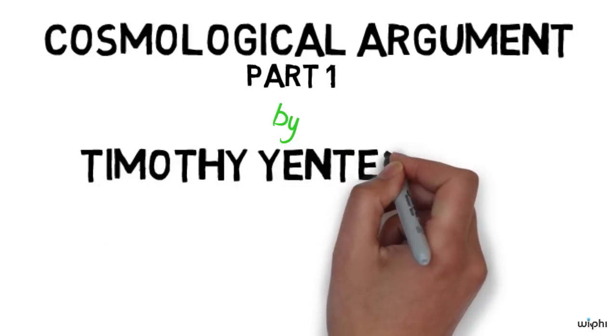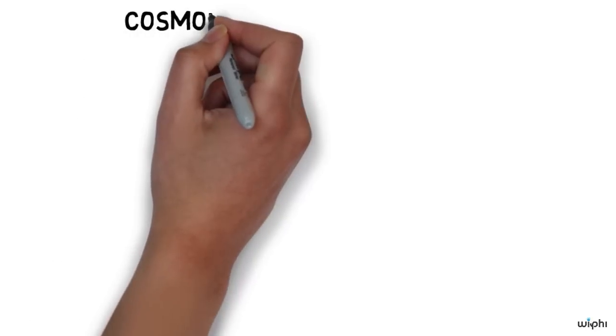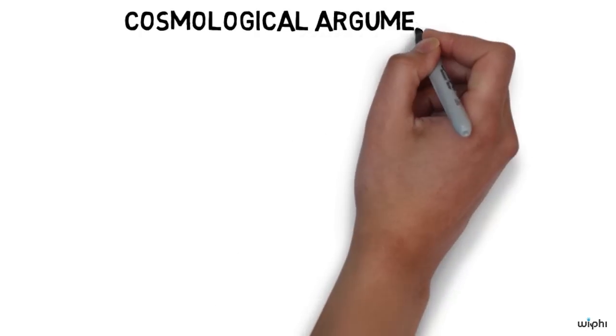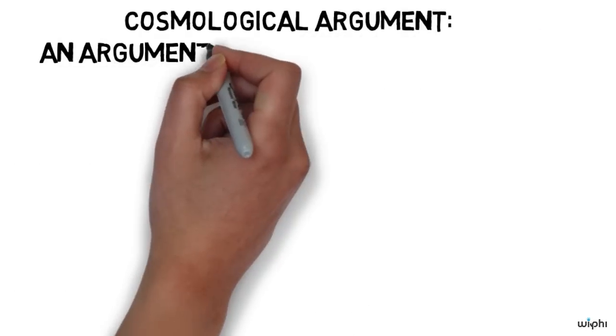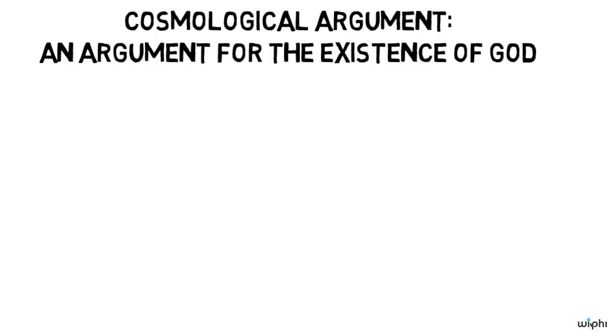I'll be talking about the cosmological argument, which we'll be breaking down into a couple parts. The cosmological argument is an argument for the existence of God, and like most arguments for the existence of God, it gets its name from its starting point. The cosmological argument starts from the existence of the cosmos, which is the collection of everything that exists.